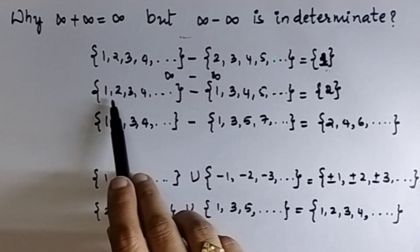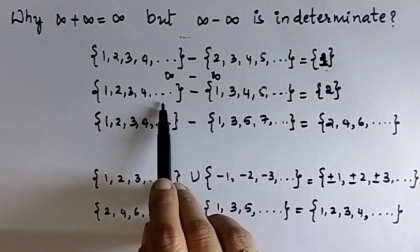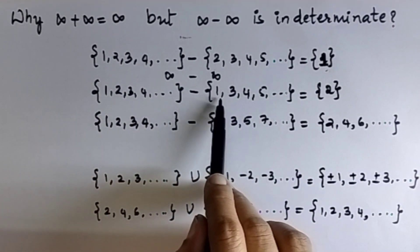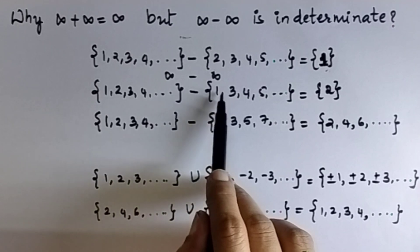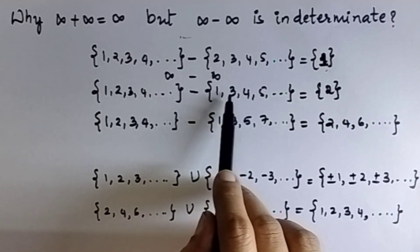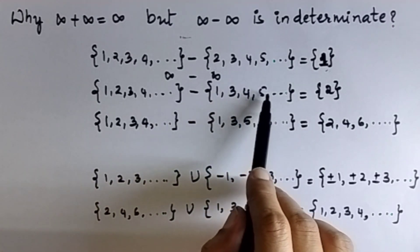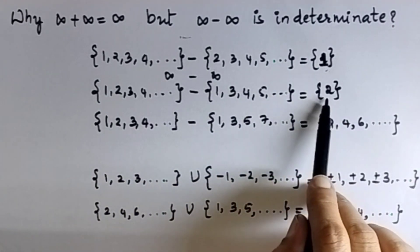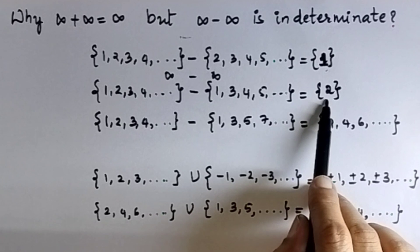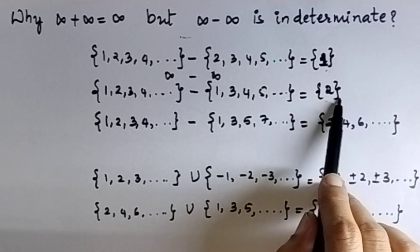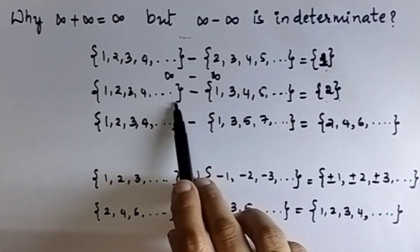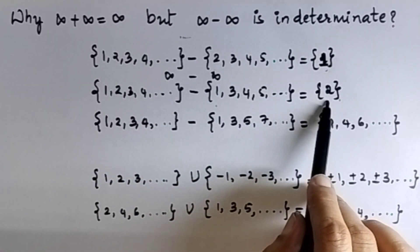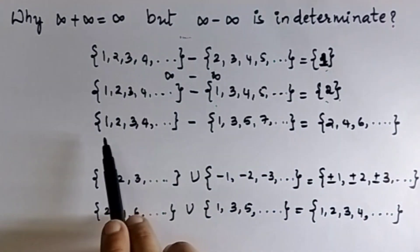Similarly, this is the set of all natural numbers. From this set, I will subtract the set containing 1, 3, 4, 5, and so on. So here the answer is the set containing 2. So here, infinity minus infinity equals the set containing 2.